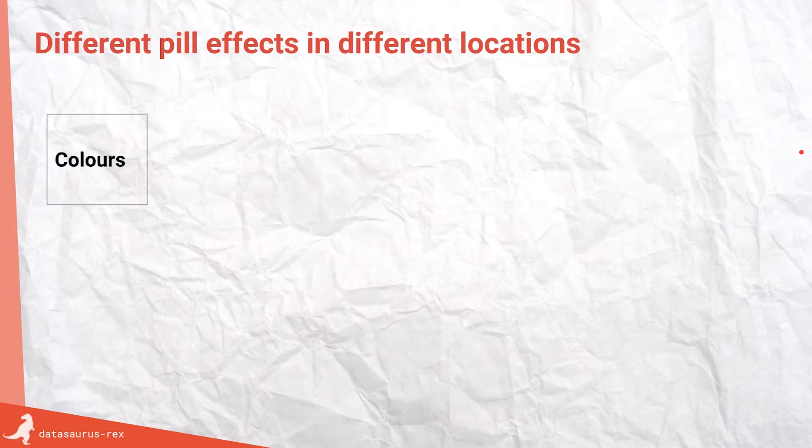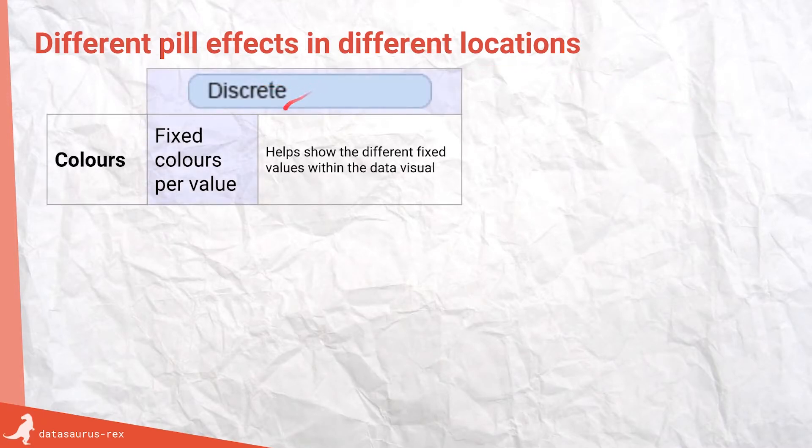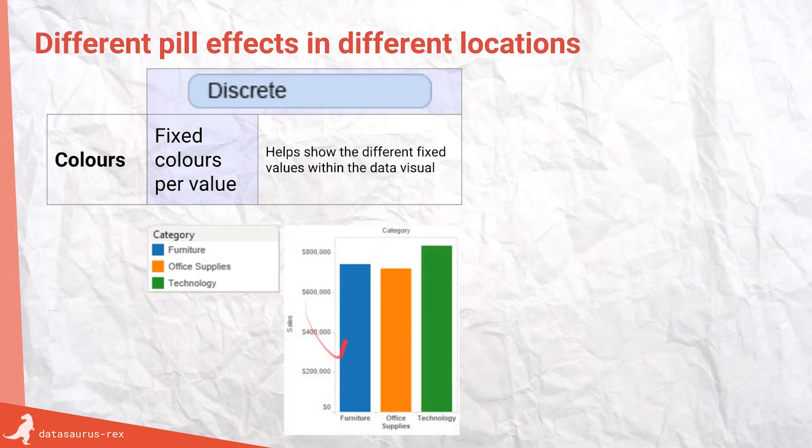When you put them into the color area, discrete values, because they're fixed, they're more like blocks of color. Like one color occupies a certain category. Here it's just easier to view which ones are which if you have a good legend and your eyes are drawn to the right areas.